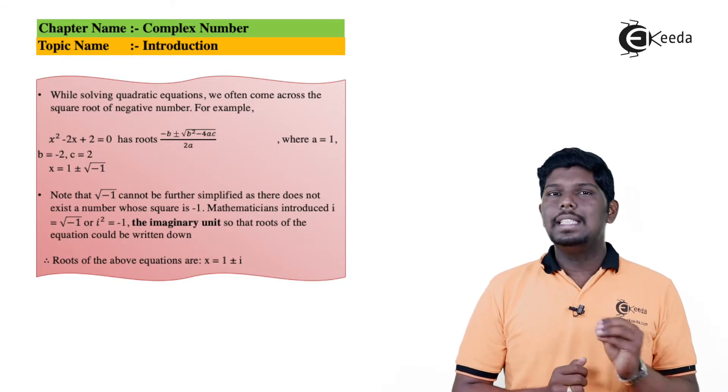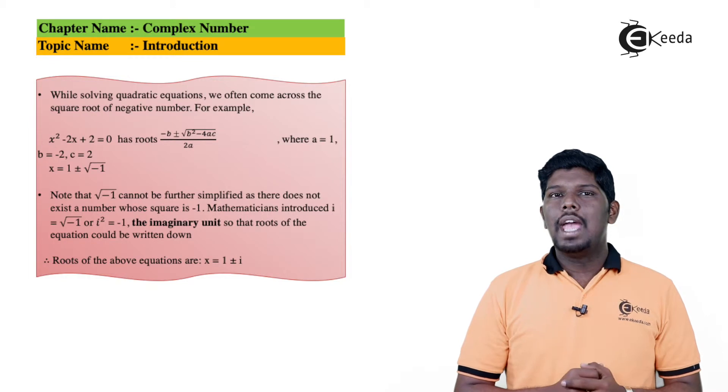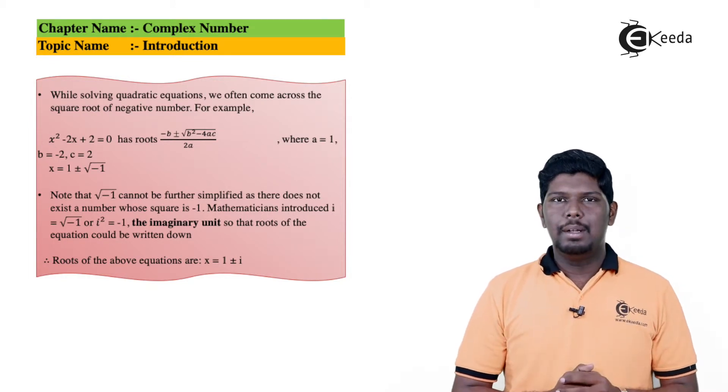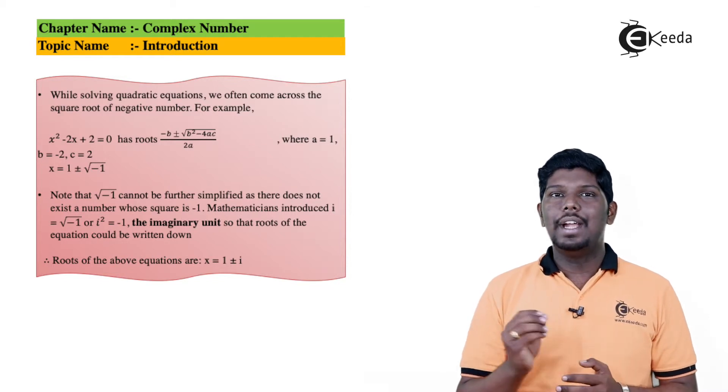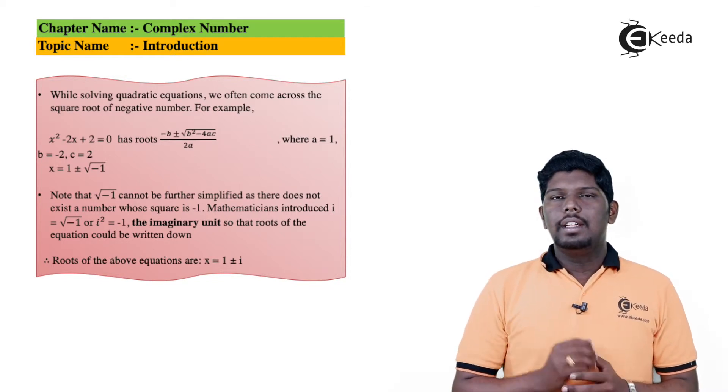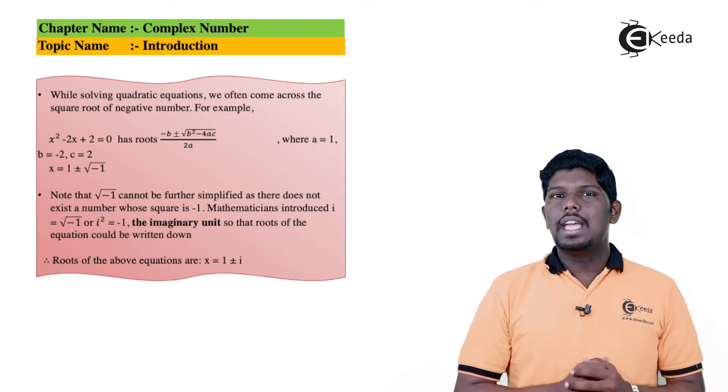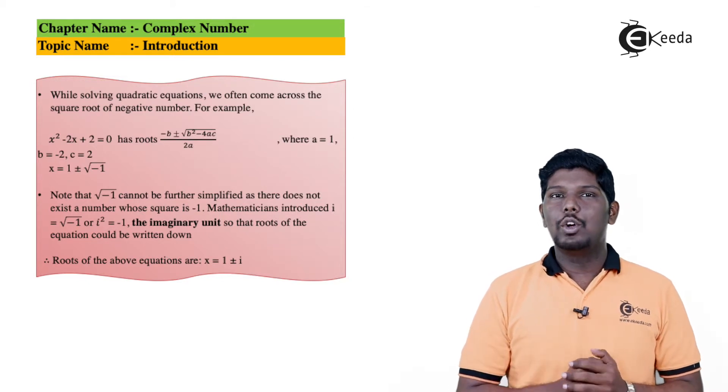This imaginary function leads to the invention of complex numbers. Whenever we have a negative term inside a square root, we say it is an imaginary number. The imaginary number, that is √(-1), is defined as i. The scientists have coined a word for this and that word is called i. i stands for imaginary number.